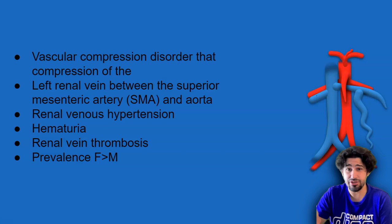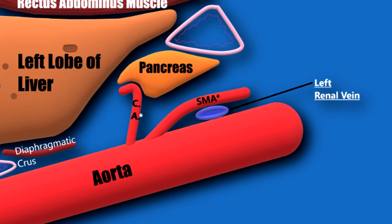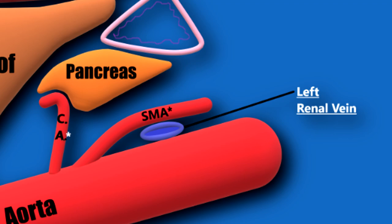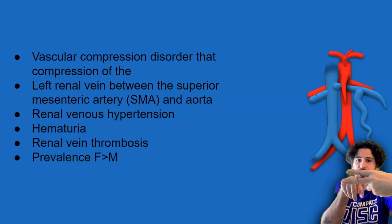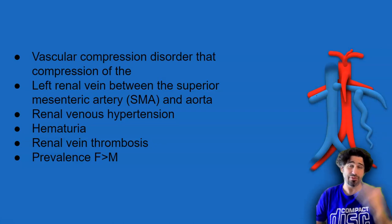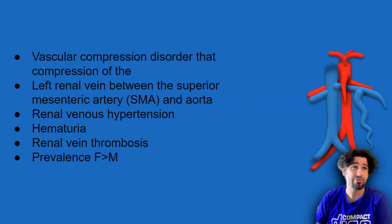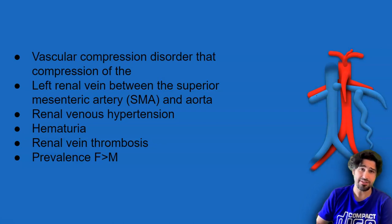Nutcracker Syndrome is a vascular compression disorder. It results in the compression of the left renal vein as it courses in between the aorta and SMA. Here's your aorta, here's your SMA — if you have a very tight angle in there, the left renal vein goes through there and gets compressed. This can lead to renal venous hypertension, hematuria (microscopic or macroscopic), and renal vein thrombosis in some cases.